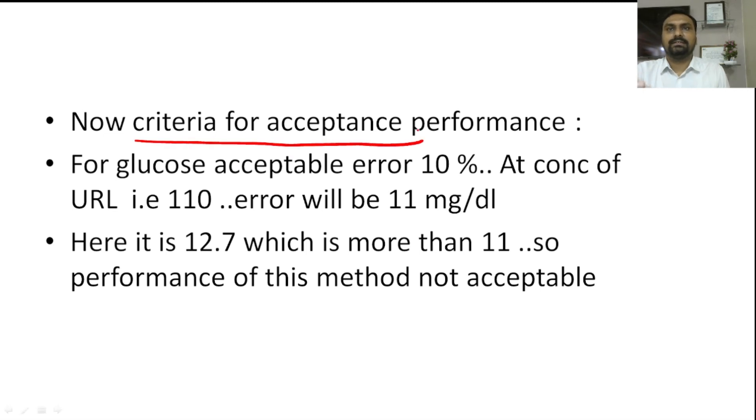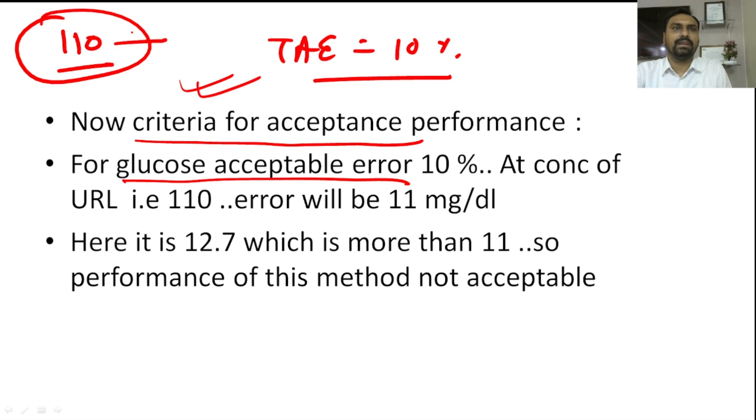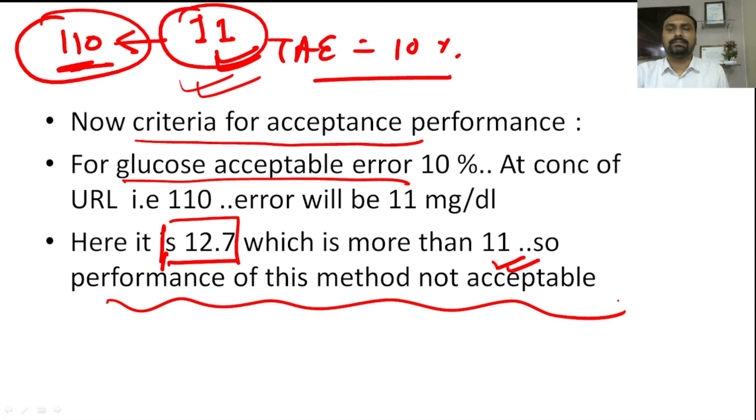Now, whether it is acceptable or not. What will be the criteria for acceptance? Suppose for glucose, the acceptable error, total allowable error, is 10%. And here we have taken the concentration at upper reference limit that is 110. So 10% of 110 will be 11. That can be maximum 11 total allowable error. But here we are getting the difference that is 12.7, which is more than 11. So the performance of this method is not acceptable because of this constant systemic error.